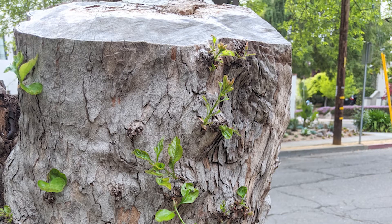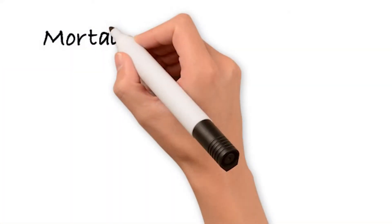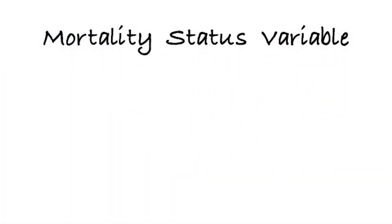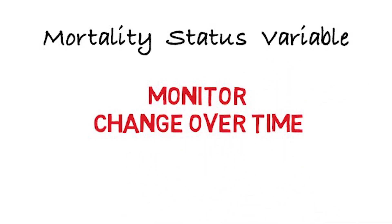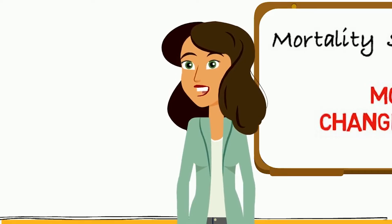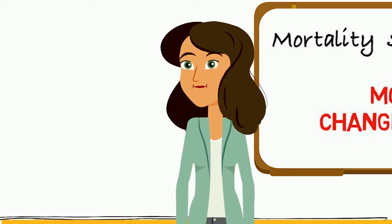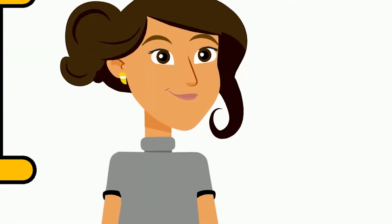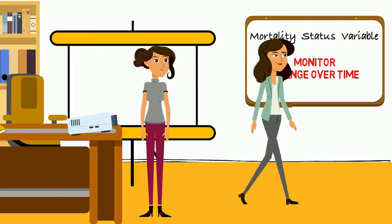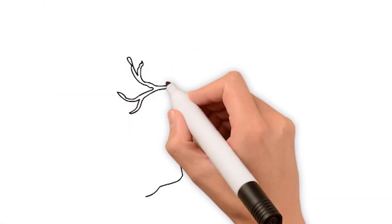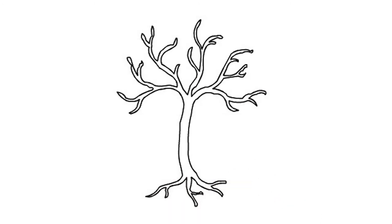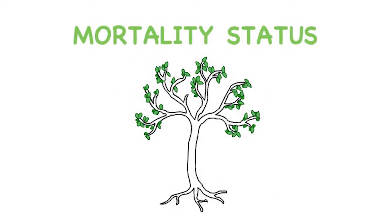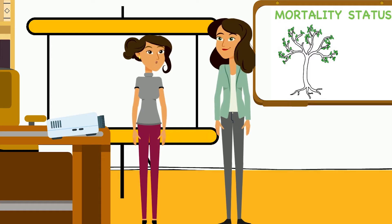That's why we need to carefully consider how to record mortality status. The mortality status variable is considered a core part of any project that seeks to monitor change over time in our urban forests. Recording mortality status accurately is absolutely critical to urban tree monitoring studies. If you want to understand the mortality of trees that you plant or manage in a city, town, or suburb, mortality status should be the centerpiece of your data collection.